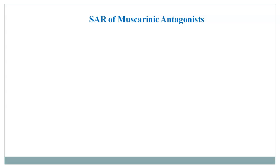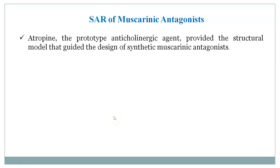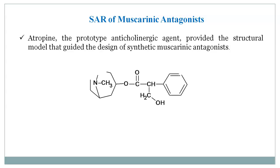Atropine, which is the prototype anticholinergic agent, provided the structural model that guided the design of synthetic muscarinic antagonists. Here is the structure of atropine, and different synthetic muscarinic antagonists can be formed by considering this structure.